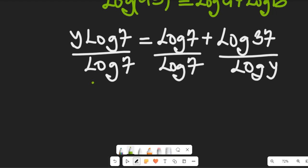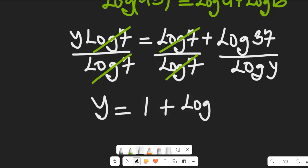So from this, log 7 will cancel with log 7 on both terms. We'll be left with y equal to 1 plus log of 37 divided by log of 7.